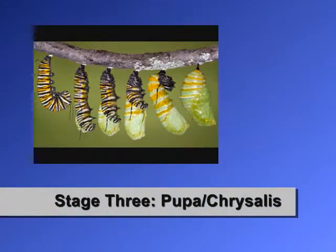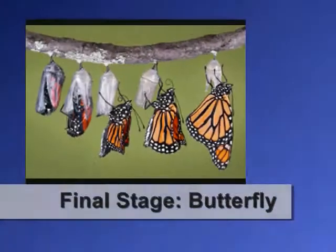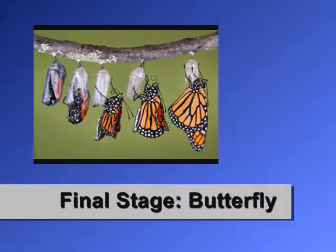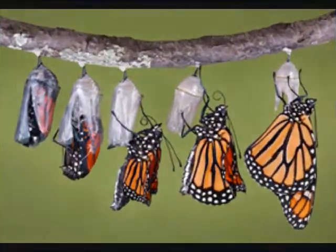The caterpillar then turns into a pupa, or chrysalis. This is its resting stage. The final stage occurs when a beautiful flying adult butterfly emerges.